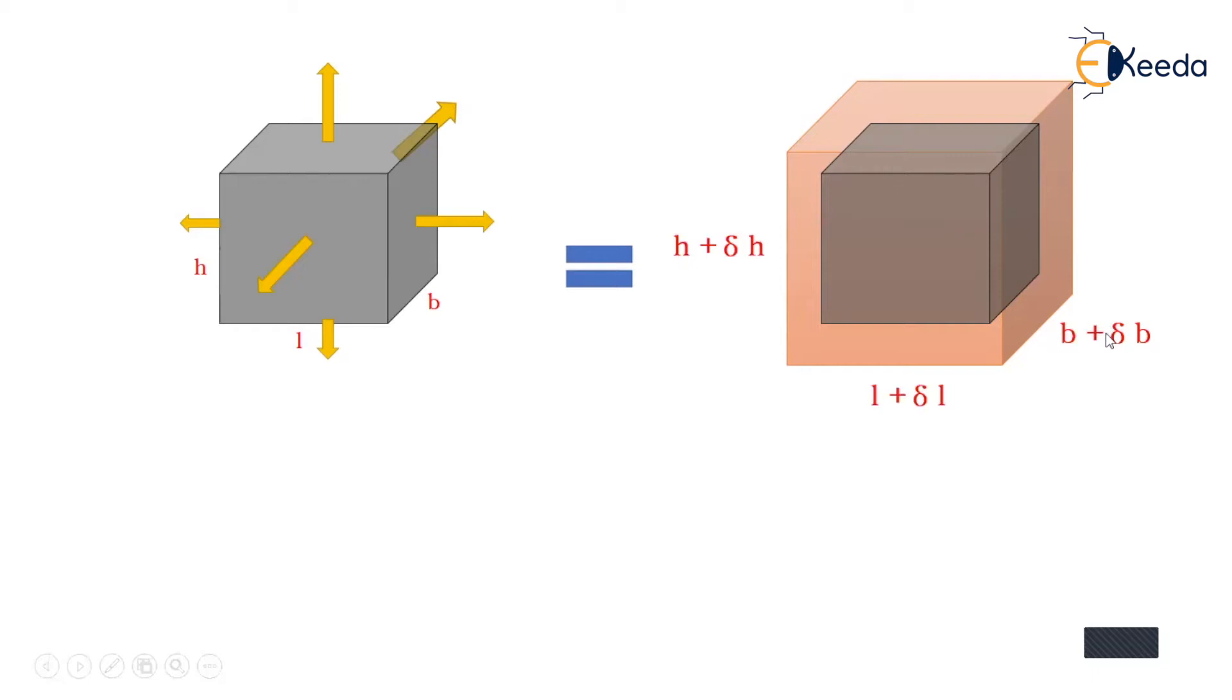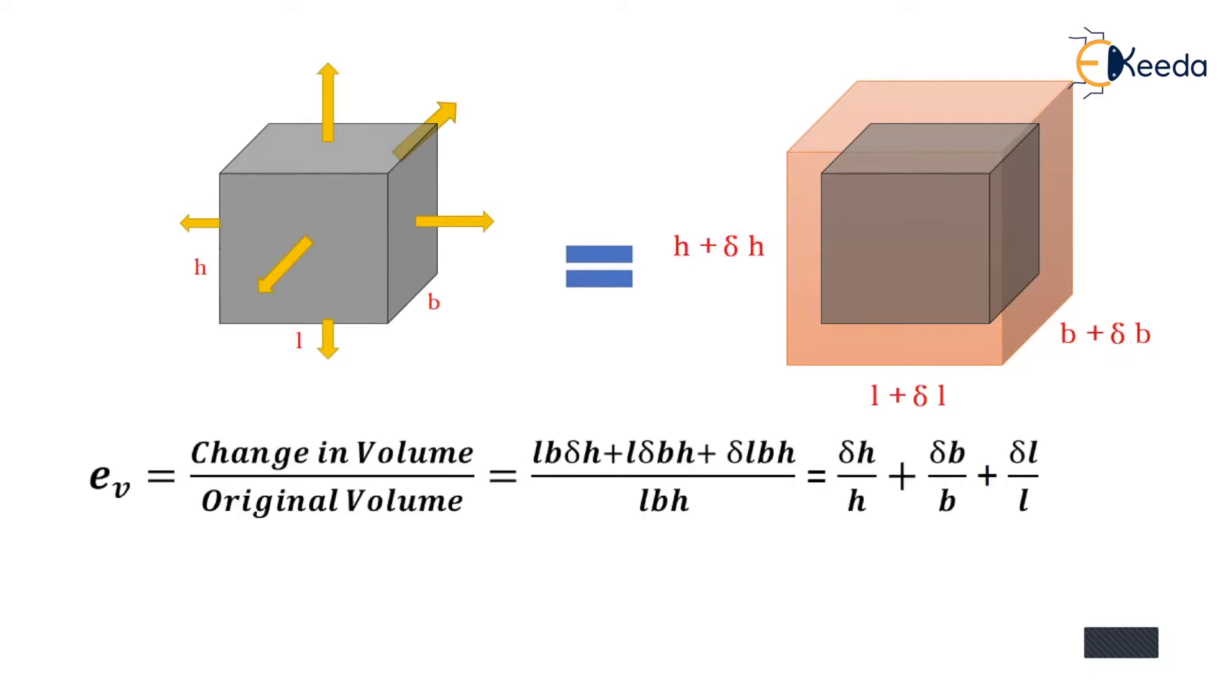Now if we put all these things into a mathematical formulation of volumetric strain, we know that change in volume upon original volume gives us volumetric strain. Hence, the change in volume we can write as length into breadth into delta h, this is change in volume along height.